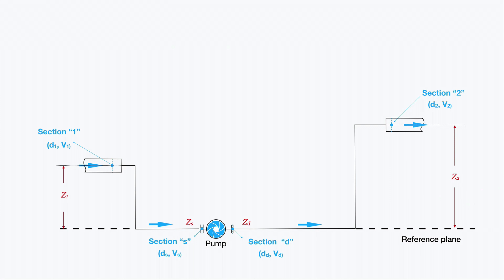Let's analyze step by step what kind of energy we have in every one of these sections: section 1, section S (the pump suction), section D (the pump discharge section), and section 2, another pipe section. We want to transport the fluid from section 1 to section 2.